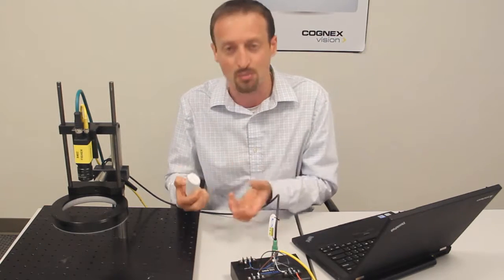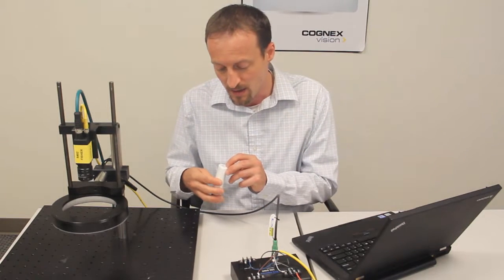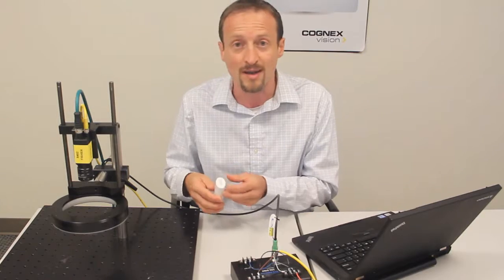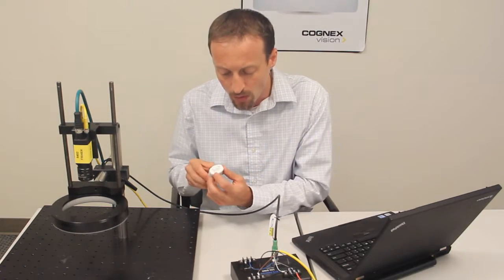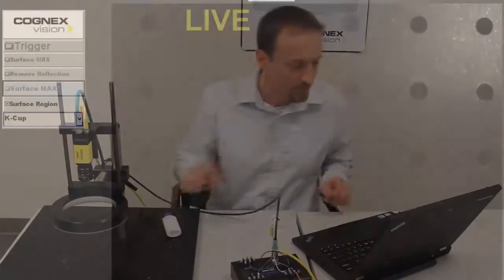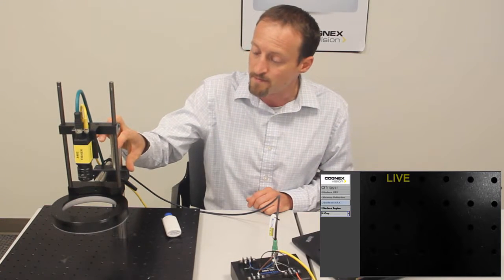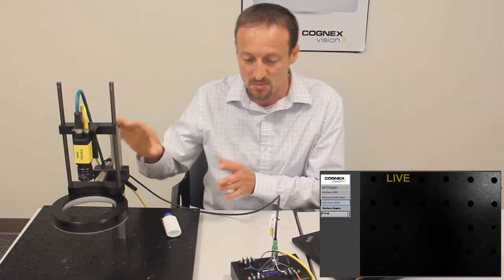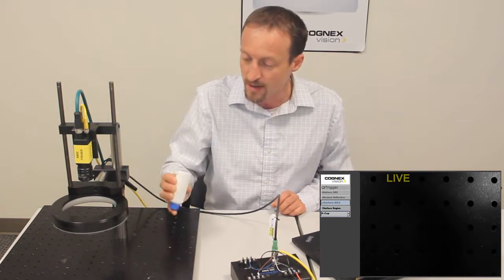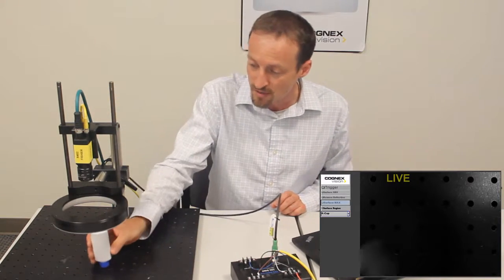Let's see what Surface Max can do to bring out the lettering and the graphics and try to ignore the printed text. So I have my setup here with Surface Max light, my camera, everything's been mounted and wired. I'm just going to put my sample underneath the camera.